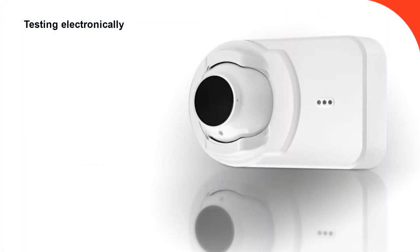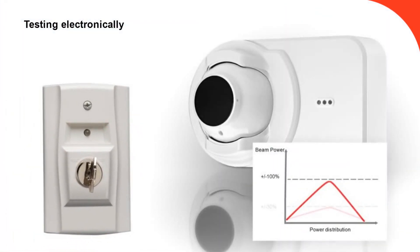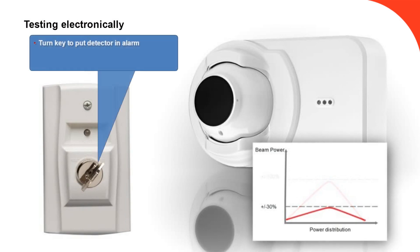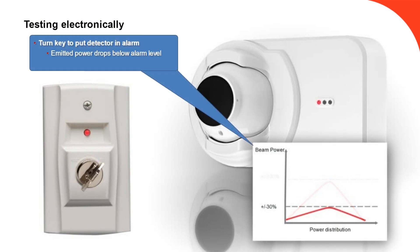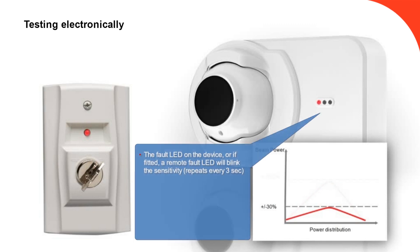The remote test key switch drops the emitter power, simulating an obscuration fire event. This is maintained for as long as the key is turned. Once reset, the device will run through its notification flash sequence at the detector, or at a dedicated remote fault LED, to indicate the sensitivity setting.